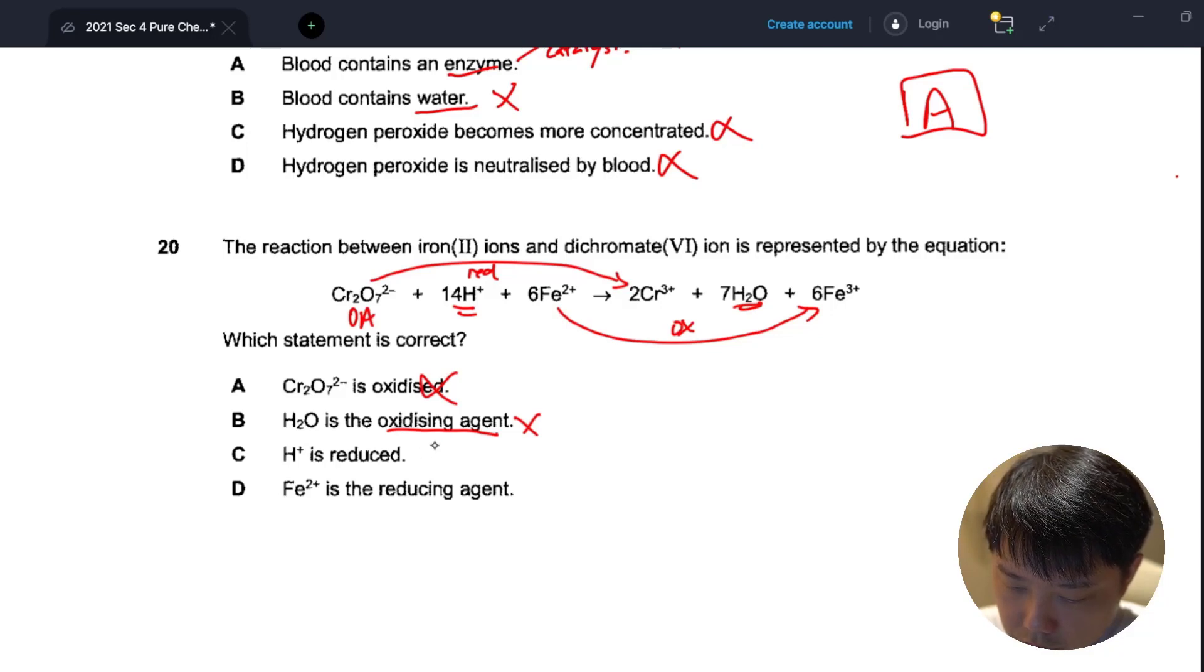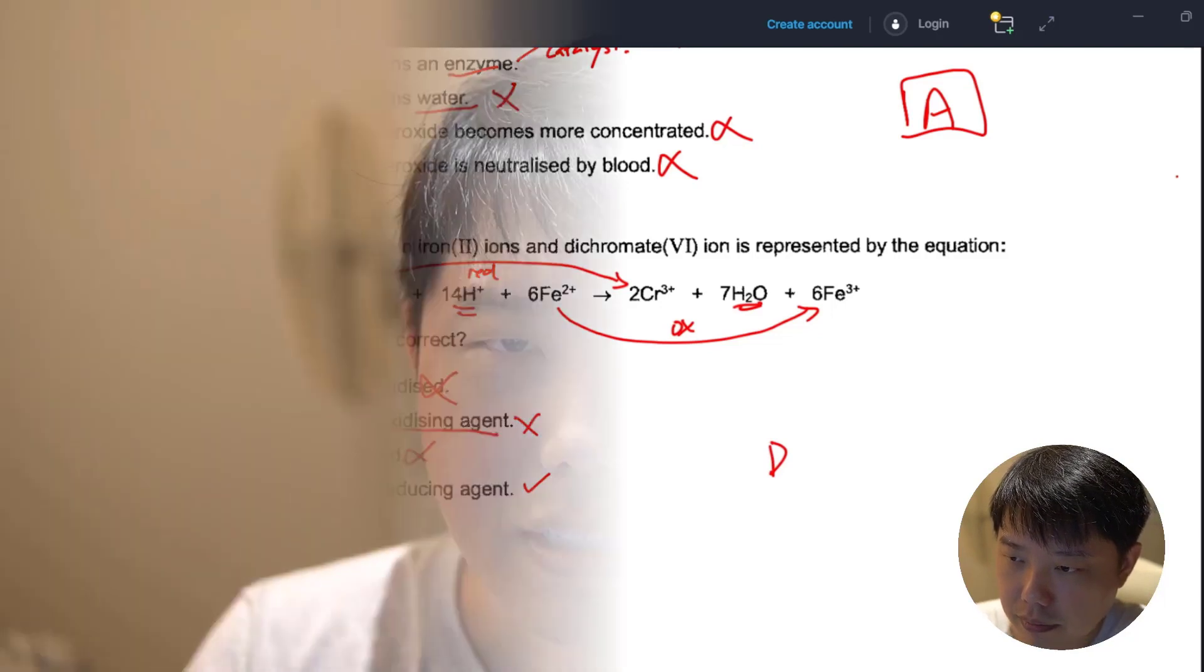Iron(II) plus is the reducing agent - yes, this is true because iron(II) plus itself is being oxidized, so it must have reduced dichromate. So our answer here is C. Hi parents and students, I'm Mr. Kua, founder and principal tutor from Mr. Chemistry.